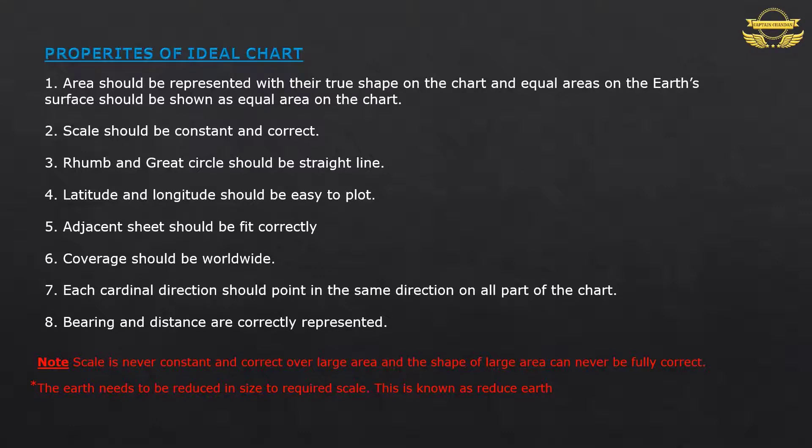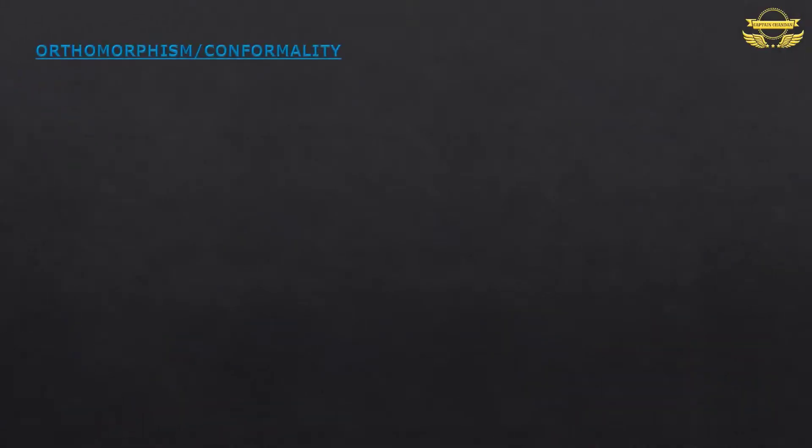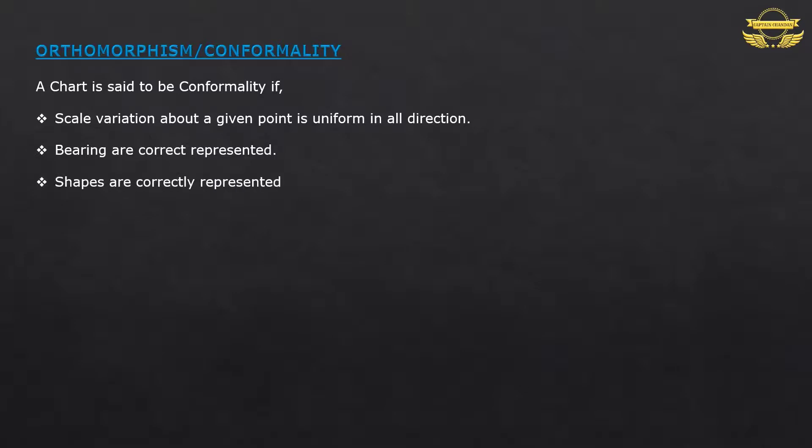The Earth needs to be reduced in size to required scale. This is known as reducers, or you can say globe. Orthomorphism or conformality: A chart is said to be a conformality if scale variation about a given point is uniform in all directions. Bearings are correctly represented. Shapes are correctly represented.